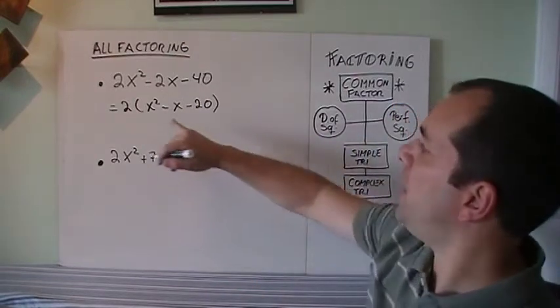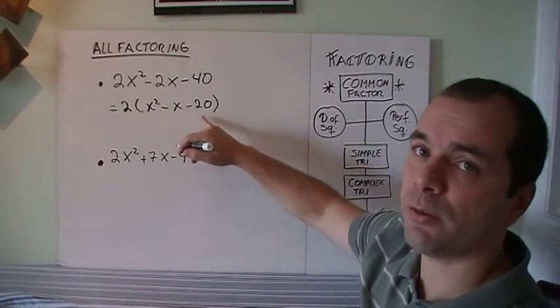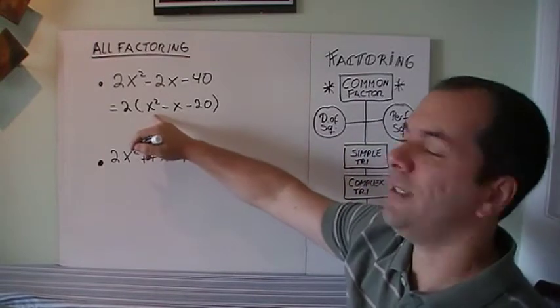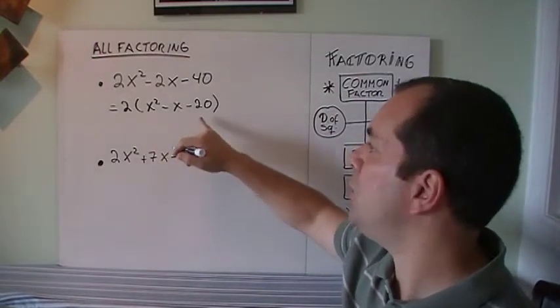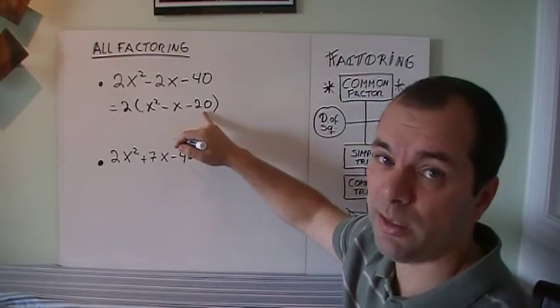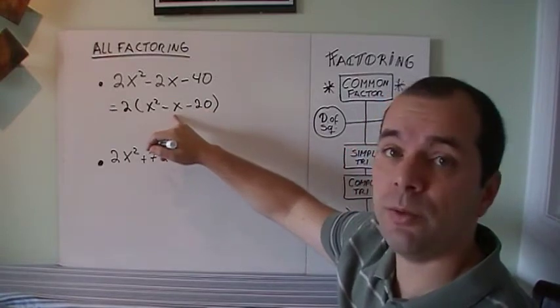Could it be a perfect square? Well, that's a perfect square, that's not a perfect square, so move on. So is it a simple trinomial? Yes, it starts with x squared. I know that I need two numbers that multiply to 20, in this case negative 20, and add up to negative 1.